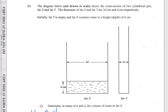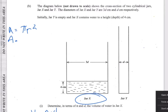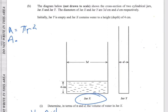Let's work out the area of jar X. Area equals pi r squared. They say to leave the answer in terms of pi, which means we're not going to substitute 22/7 or 3.14 — we're just going to leave it with pi.